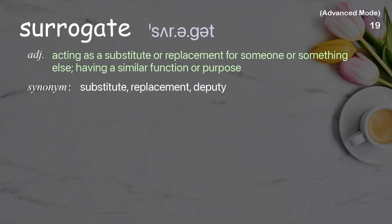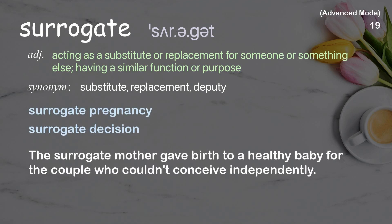Surrogate: acting as a substitute or replacement for someone or something else, having a similar function or purpose. Examples: surrogate pregnancy, surrogate decision. The surrogate mother gave birth to a healthy baby for the couple who couldn't conceive independently.